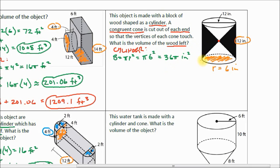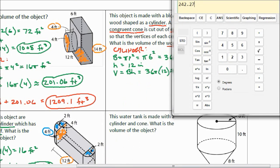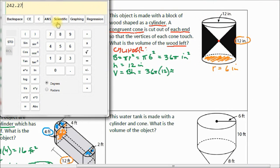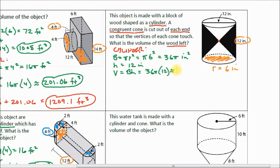There is the area of the base of our cylinder. Our height is 12 inches — the distance between the two bases of our cylinder. So our volume is going to be base area times height, which is 36π times 12. That's approximately 1357.17 inches cubed. There's the volume of our cylinder.